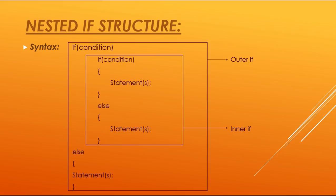Here we have the syntax of nested if structures. The outer block shows the outer if statement, in which the inner if statement is written. The keyword 'if' and the condition is written inside small brackets. If this outer condition comes true, the inner if will execute. If the inner condition also comes true, that statement will be executed.